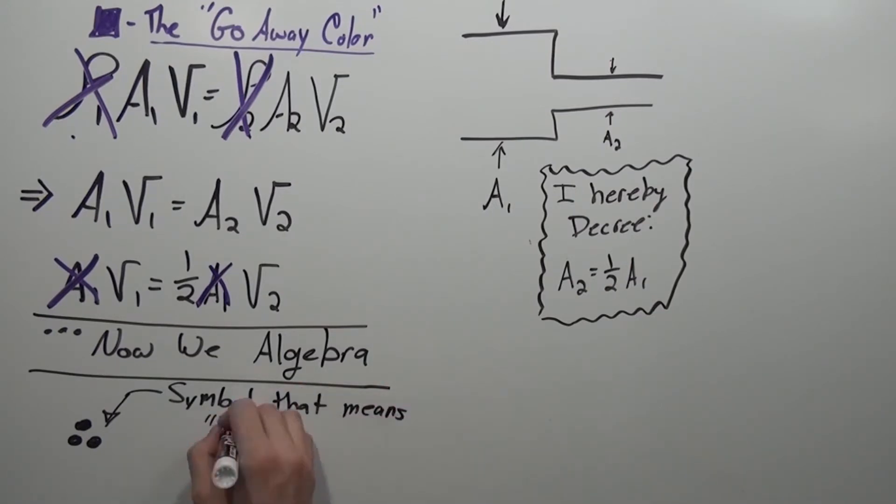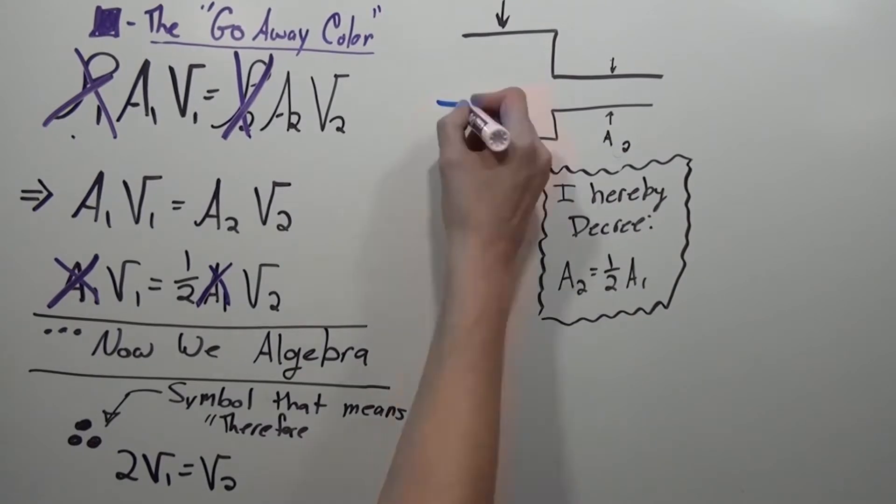Therefore, this means, quite simply, that the velocity V sub 2 is twice V sub 1.